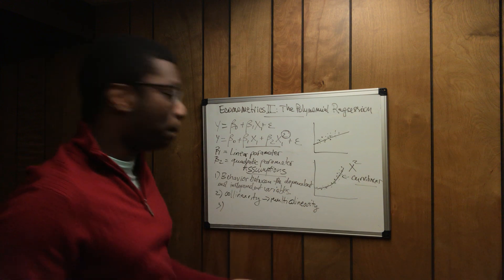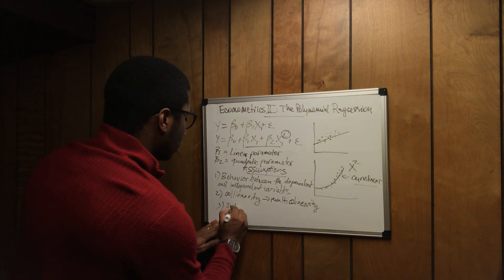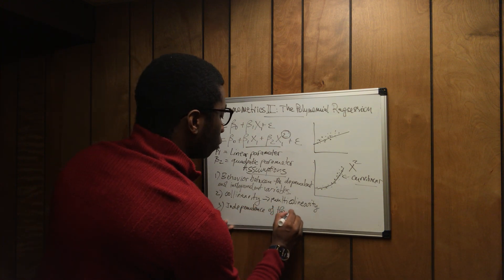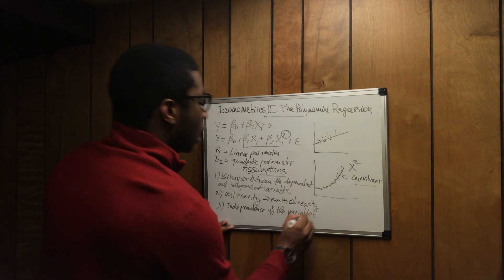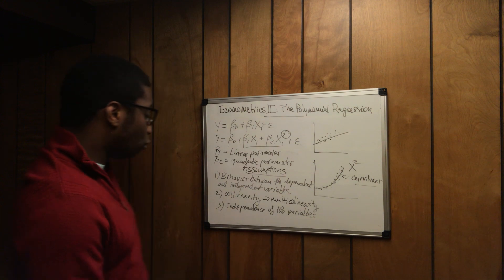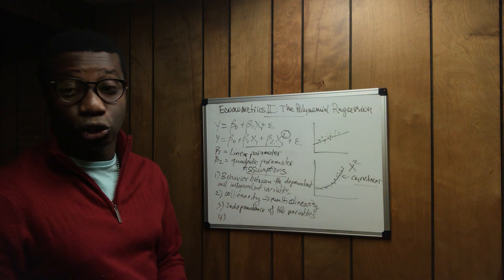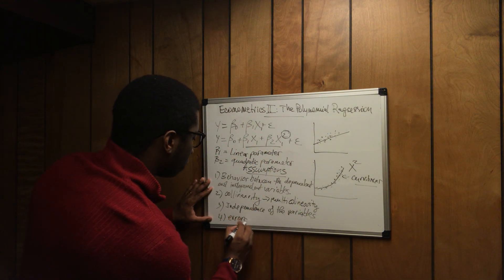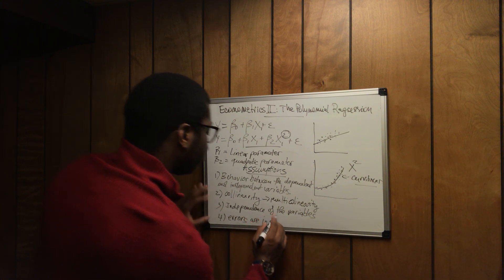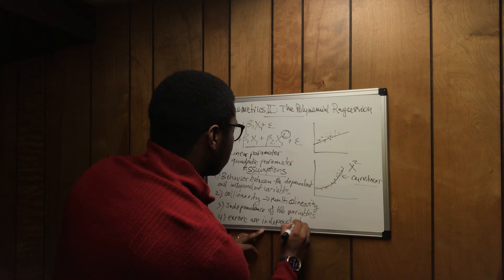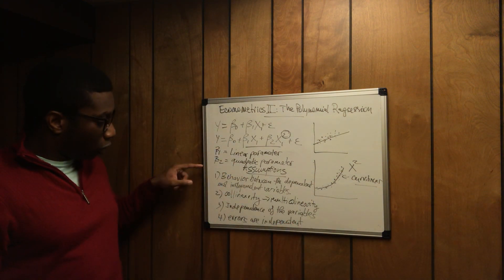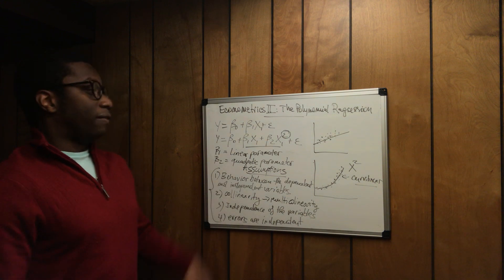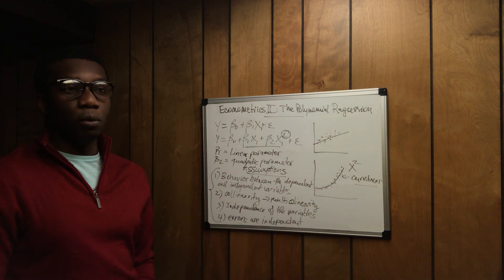The third assumption is you have to look for independence of the variables — meaning the independent variables. The fourth and last assumption is you have to look for independence of the errors too; you have to make sure that the errors are independent. If those four assumptions are fulfilled, then you can use the polynomial regression.